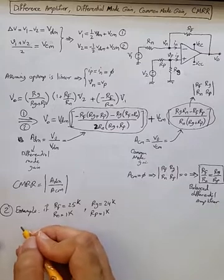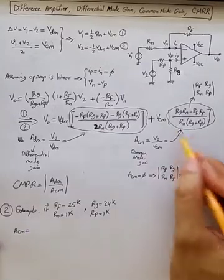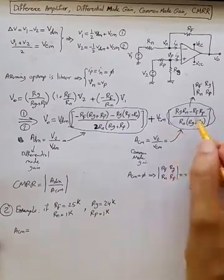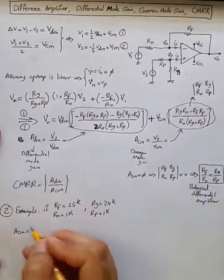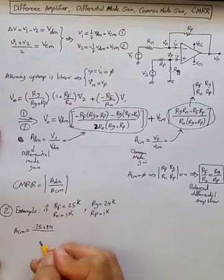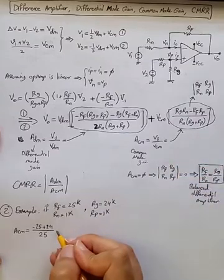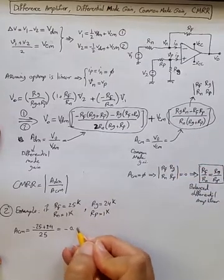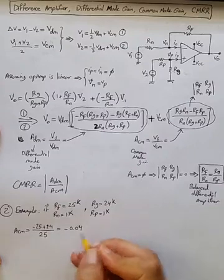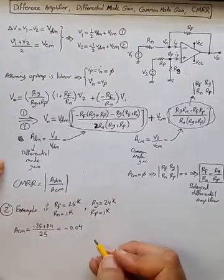Let's calculate. We know that ACM is, using this equation, minus 24 plus 24 minus 25 plus 24 in the numerator, and in the denominator we have 25. So we get minus 0.04, that's volt over volt, dimensionless. That is the common mode gain.